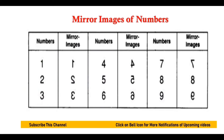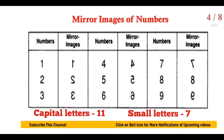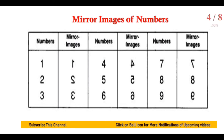Now we will see how the mirror images of numbers are formed. We have already seen that for capital letters, 11 letters have a reflected image the same as the object, and for small letters there is one. Now we will see which number is reflected as the same. For the number 1, if you place the mirror aside, the direction changes. Similarly for 3, 4, 5, 6, 7.